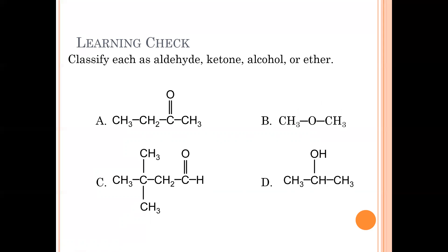Now classify these as aldehyde, ketone, alcohol, or ether. A: the carbonyl carbon is in the middle — this is a ketone. It's four carbons long; numbering from the end closest to the carbonyl gives carbon one, two, three, four — this is a 2-butanone. B: we see a C-O-C pattern — anytime you see COC, this is an ether. Both chains are the same, so this becomes methoxymethane.